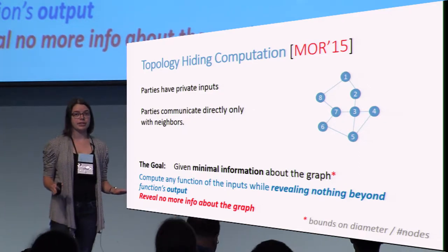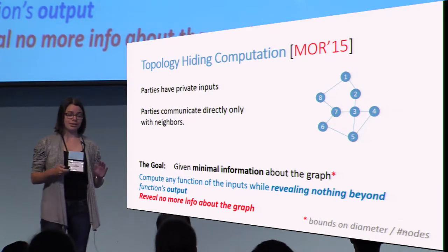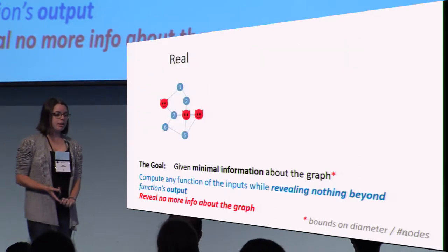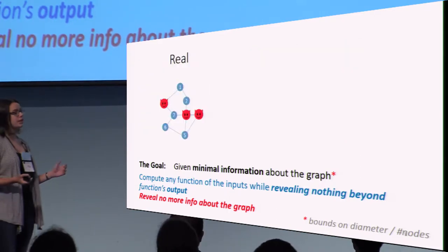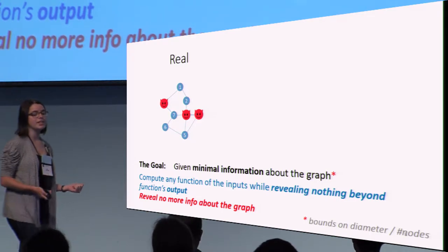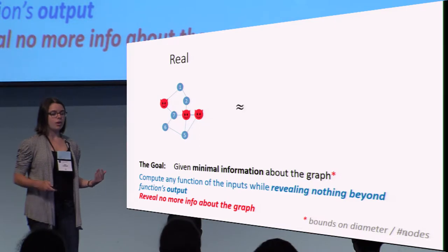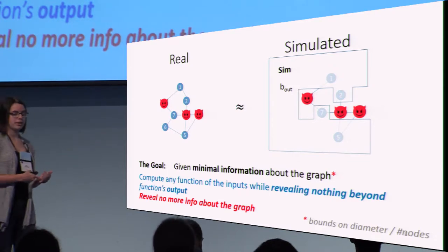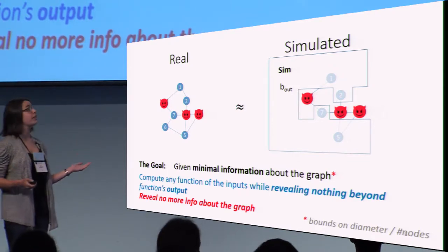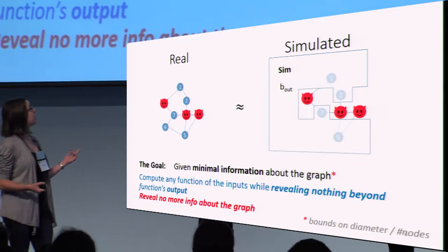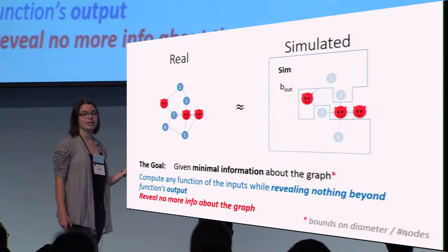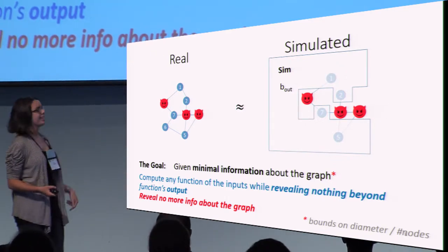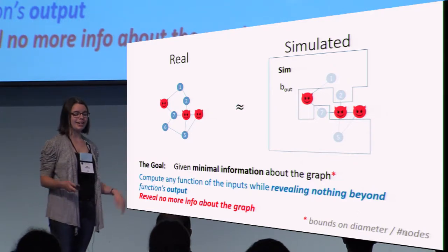This includes revealing no more information about the graph. To formally define the security of this model, we say that an adversary who statically corrupts some set of nodes can't tell if he's interacting with a real graph or if he's interacting with a simulated graph. The simulator knows the output of the function and the local topology of the adversarially corrupted nodes. Notice the simulator doesn't have an edge between nodes 1 and 2 because he doesn't know that exists.